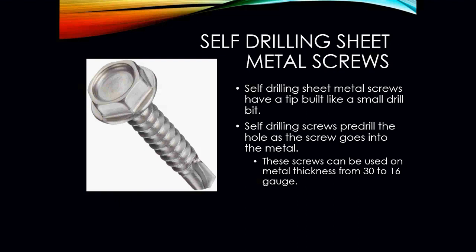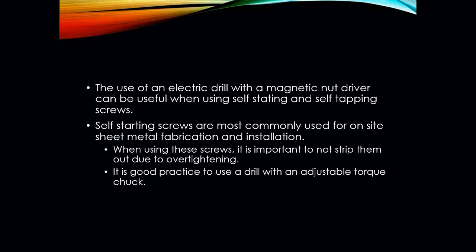You'll also have what we call your self-drilling or self-tapping sheet metal screws. These have a tip built like a small drill bit, and as you're drilling the screw in, it does the work for you. These screws can be used on sheet metal thicknesses from 30 to about 16 gauge metal. The use of an electric drill with a magnetic nut driver can be useful when using self-starting or self-tapping screws. Your self-starting screws are the most commonly used on many job sites for fabrication and installation. It's important not to strip them out by over-tightening — use a drill with an adjustable torque chuck to avoid ruining the screw.